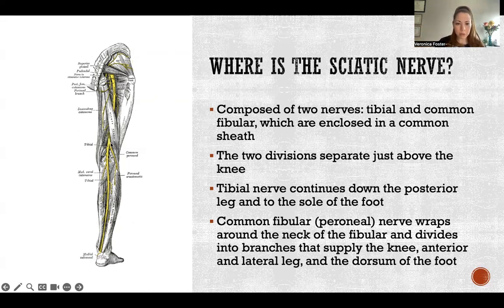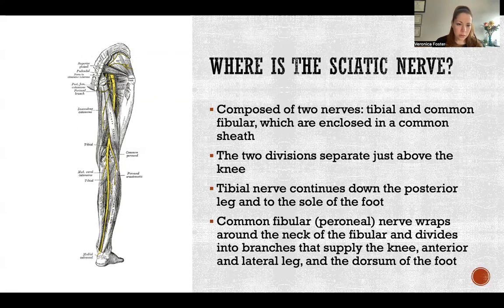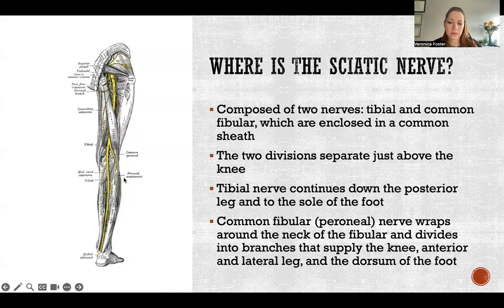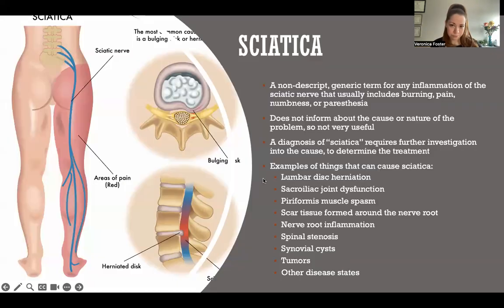Then the common peroneal nerve wraps around just around the neck of the fibula. So it's wrapping around the lateral side of the leg, kind of moving to the front, where it then supplies the knee, the anterior and lateral portion of the leg, and the dorsal — meaning the top — of the foot.